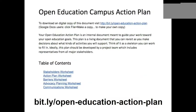Beyond those dozen strategies, there's also the Open Education Campus Action Plan — a document from SPARC that helps kickstart thinking about who your key stakeholders are, where the barriers are, where the institutional history and landmines and opportunities are. You really have to contextualize efforts to build support on your own campus. And my slides are going to be available openly — I'd be a ridiculous advocate for open if they were not.